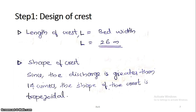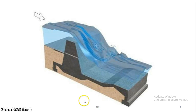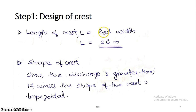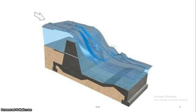Moving on to Step 1: design of the crust. We have to determine the length of the crust. The width of the crust equals the bed width — that is 26 meters. Now, for the shape of the crust: for a discharge less than 14 cumecs, we should use a trapezoidal section. We draw a large trapezoidal section for Q ≤ 14 cumecs and fix the crust wall accordingly.